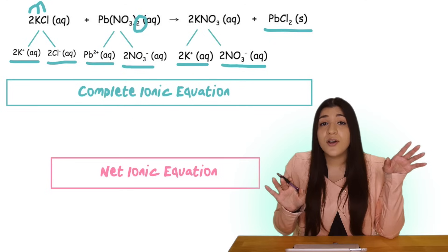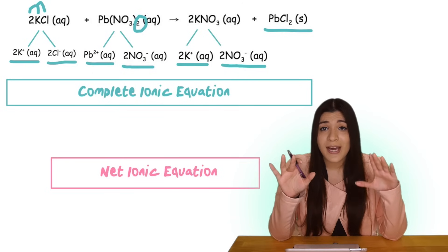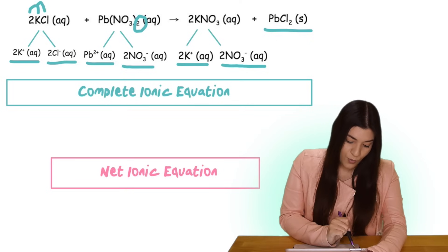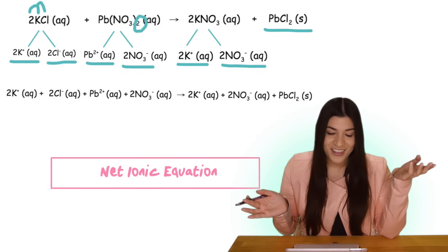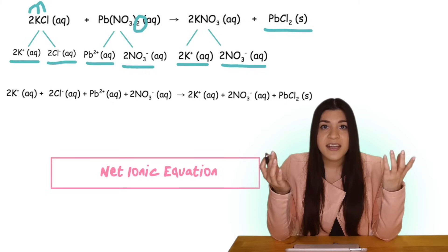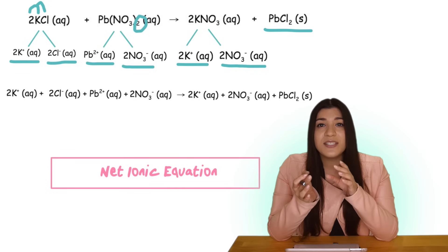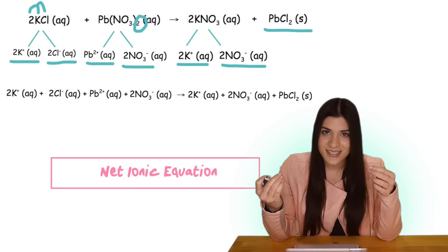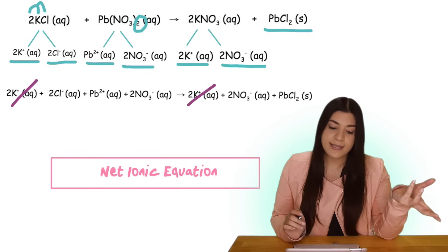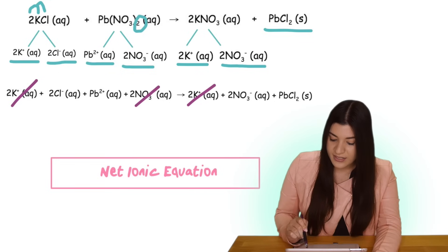The solid lead chloride we leave alone — we never break apart solids or liquids, only aqueous compounds. Now let's write our complete ionic equation by combining all reactants and all products. To get the net ionic equation, we cancel out any like ions — these are known as spectator ions. Spectator ions appear on both the reactant and product sides. In this case, potassium cancels out and nitrate also cancels out.